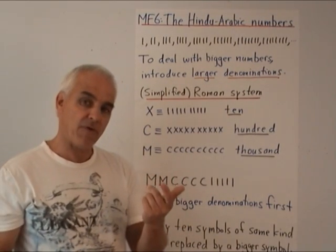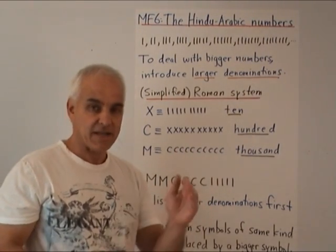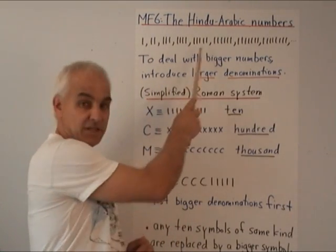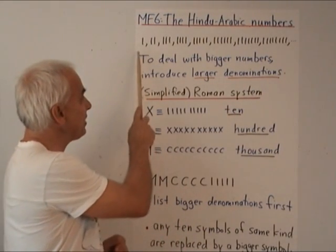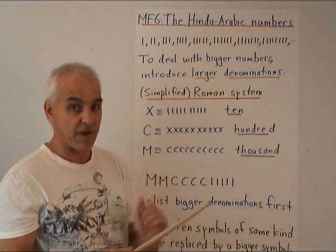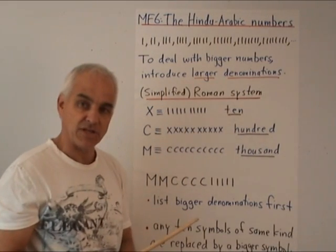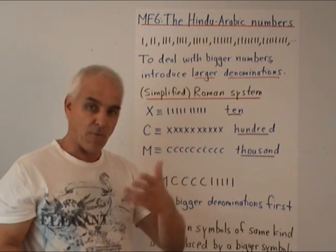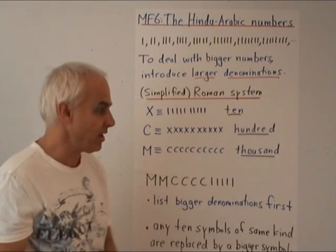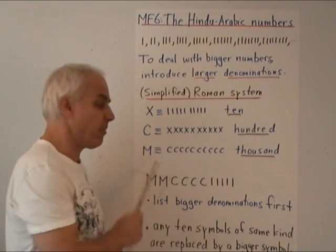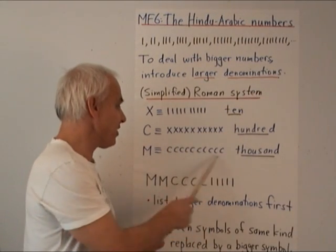So today we're going to talk about a precursor to the Hindu-Arabic system: the Roman numeral system. That's a natural stepping stone from this primitive basic understanding of numbers to the one we currently have. The idea of the Roman system is to introduce other symbols for larger denominations — just as in commerce we don't want to run the economy using only one-dollar bills, we also want ten-dollar bills and hundred-dollar bills and thousand-dollar bills.